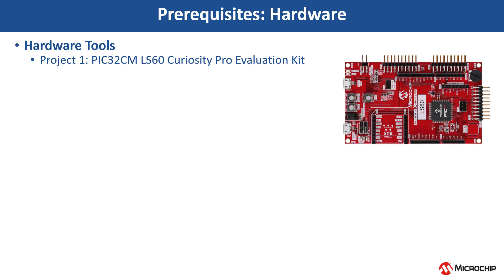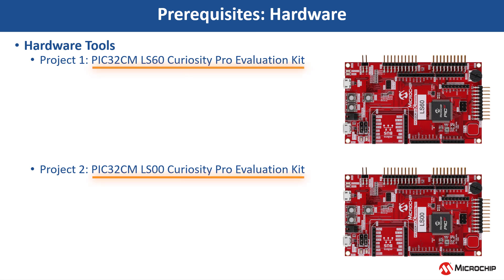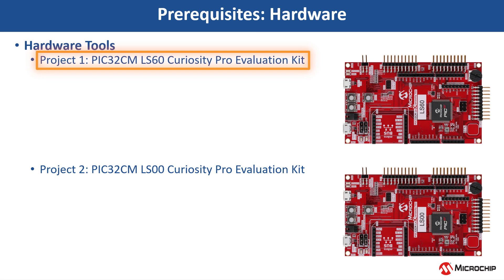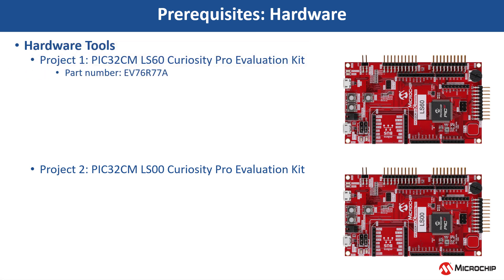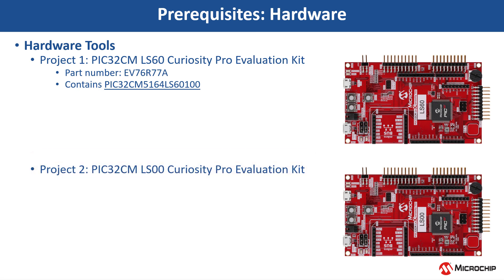The TrustZone-based PIC32CMLX family of microcontrollers comes in two options: PIC32CMLS60 and LS00. In this video, we demonstrate the TrustZone-based security on PIC32CMLS60 and LS00 using two projects. Project 1 is a TrustZone-based project on PIC32CMLS60 Curiosity Pro Evaluation Kit, using an ARM Cortex-M23-based MCU. Project 2 is a TrustZone-based project on PIC32CMLS00 Curiosity Pro Evaluation Kit, also using an ARM Cortex-M23-based MCU.